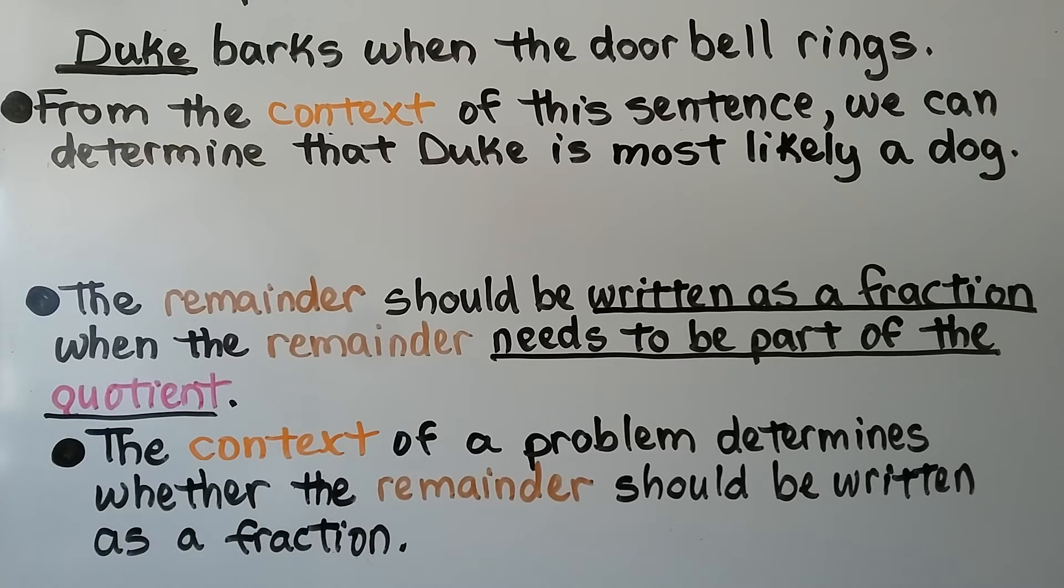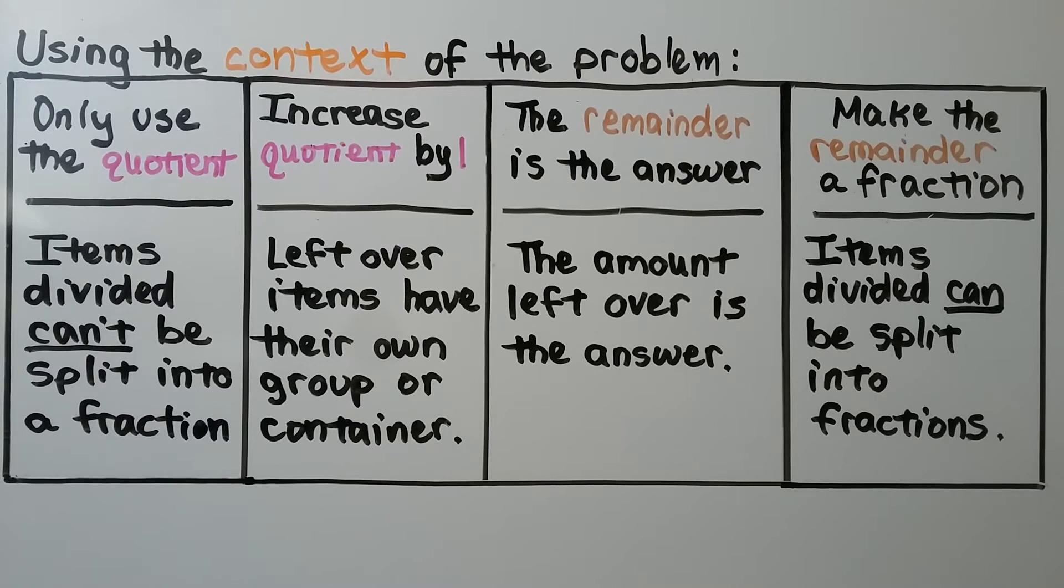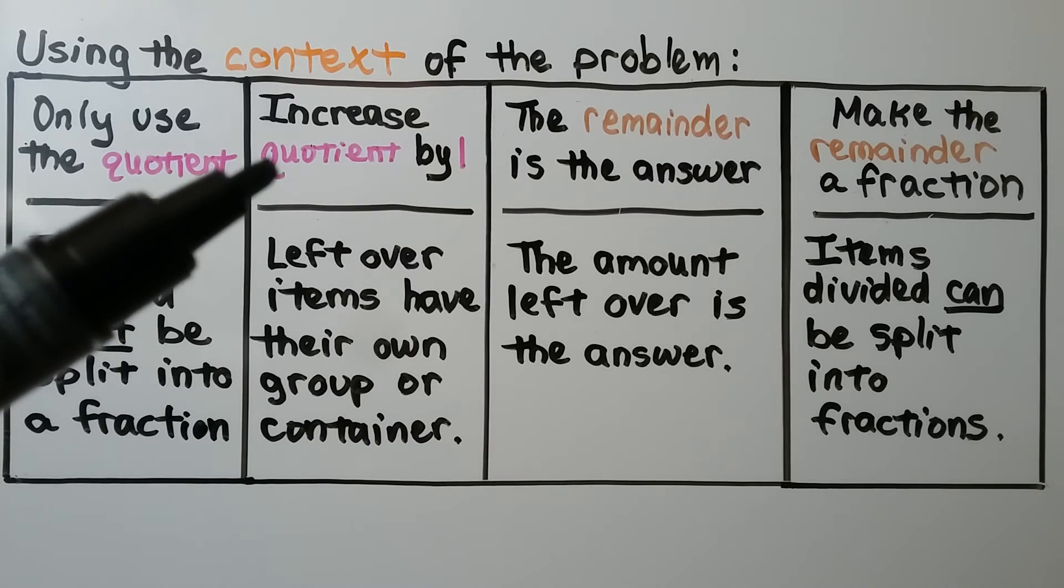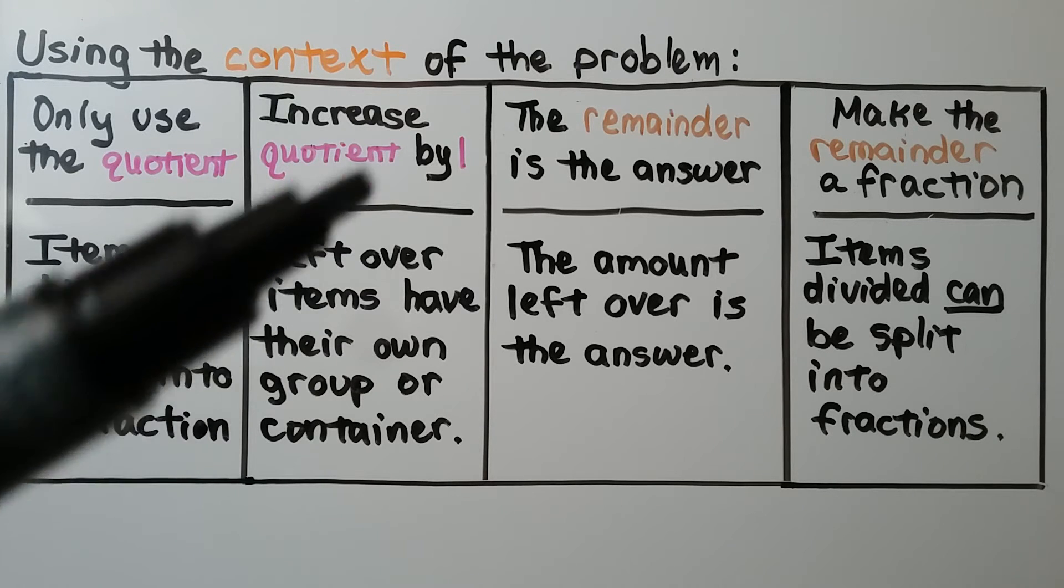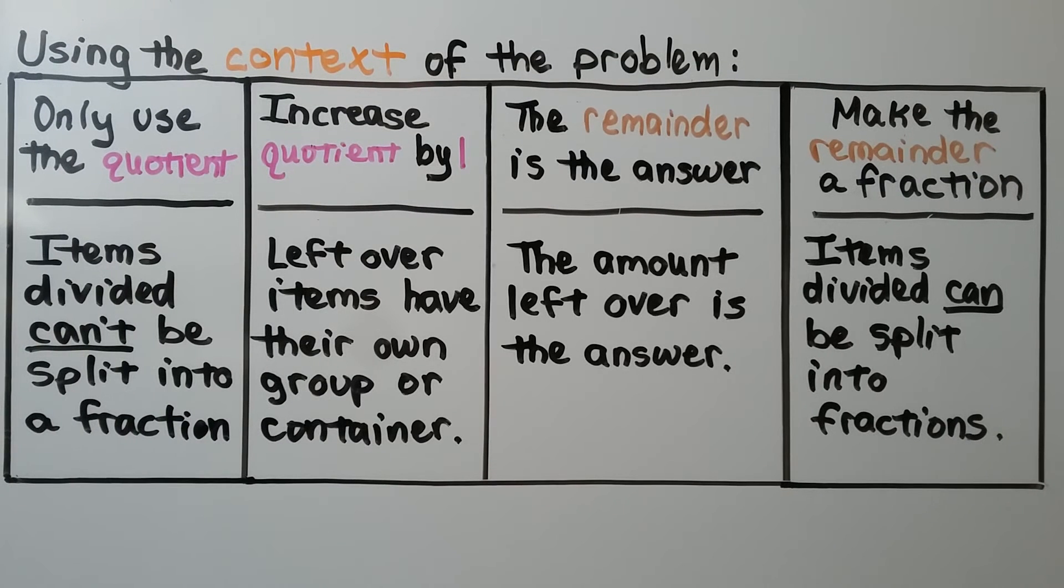The remainder should be written as a fraction when the remainder needs to be part of the quotient. And the context of a problem determines whether the remainder should be written as a fraction. So for using the context of the problem, we're going to only use the quotient if the items divided can't be split into a fraction. We need them to be whole. We would increase the quotient by 1 if the leftover items have their own group or container. And the remainder is going to be the answer if the amount left over is the answer. And we'll make the remainder a fraction if the items divided can be split into fractions.